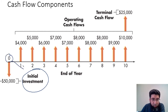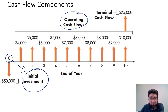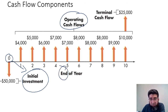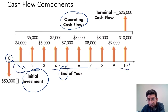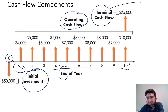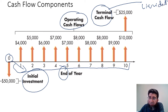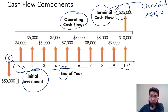On the timeline, the initial investment is at point zero. Operating cash flows — generated by the asset employed in the project — appear at the end of each year for 10 years. Then the terminal cash flow, which is the inflow from liquidating the asset, is around $25,000. This represents the complete project cash flow timeline.